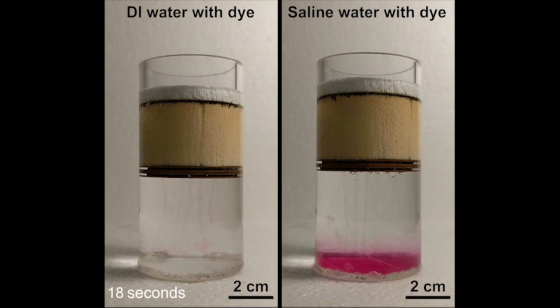Many attempts at solar desalination systems rely on some kind of wick to draw the saline water through the device. But these wicks are vulnerable to salt accumulation and relatively difficult to clean. The team focused on developing a wick-free system instead.